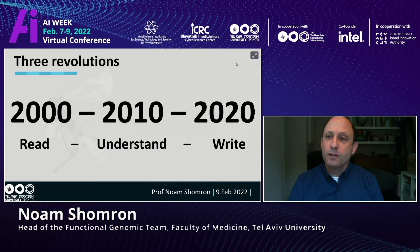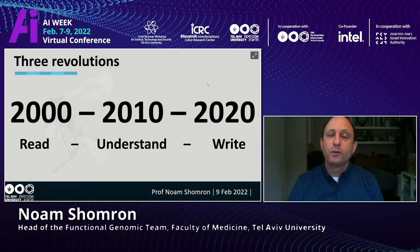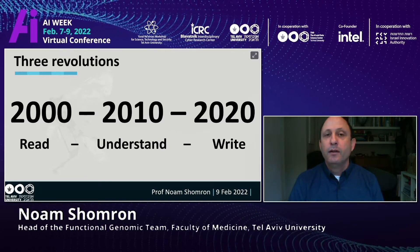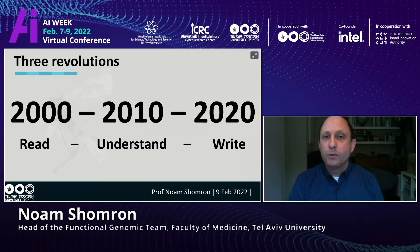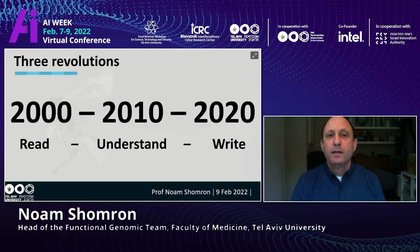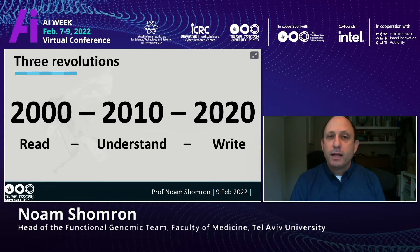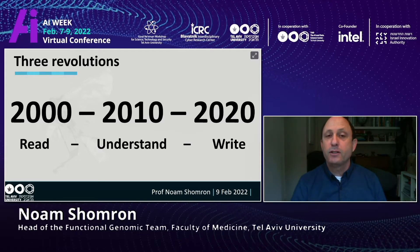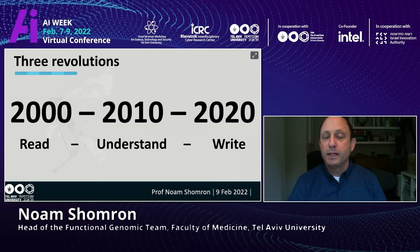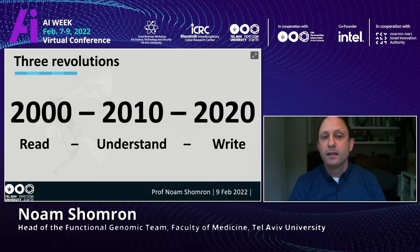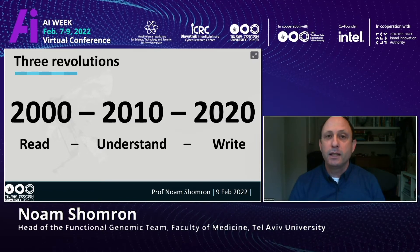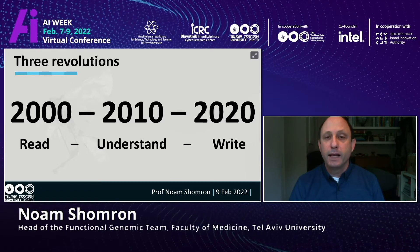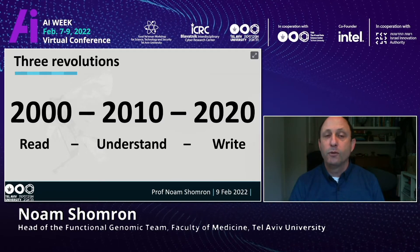The first revolution occurred about 20 years ago, when the first human DNA was read from beginning to end — three billion letters. Since then, in bioinformatics, we've been trying to understand the various changes in the DNA that could lead to diseases. And in 2020, we also saw that we can now write the DNA or write the RNA.